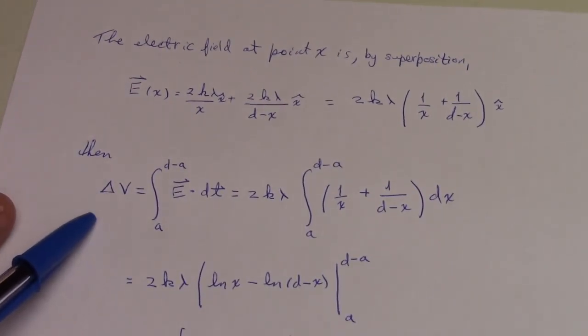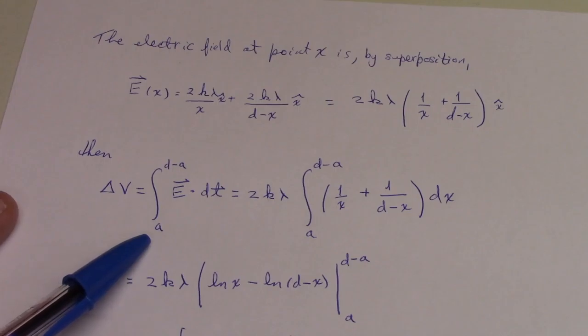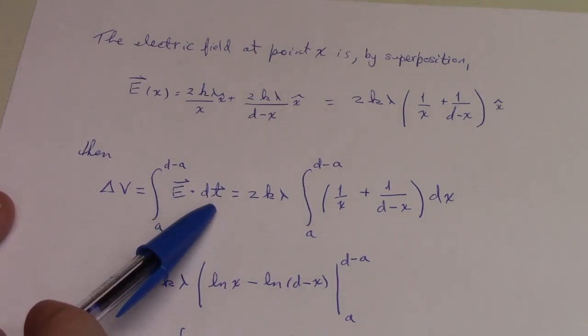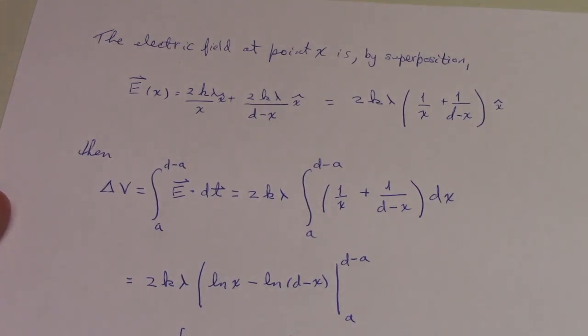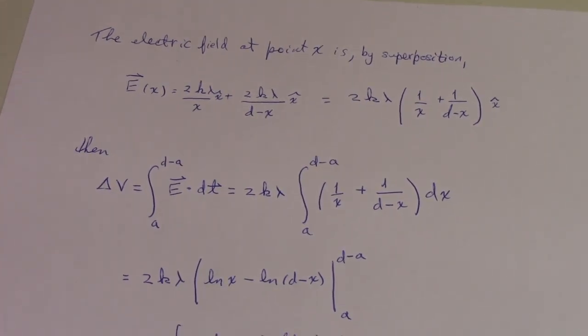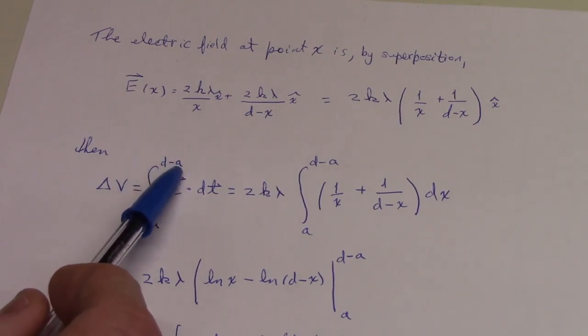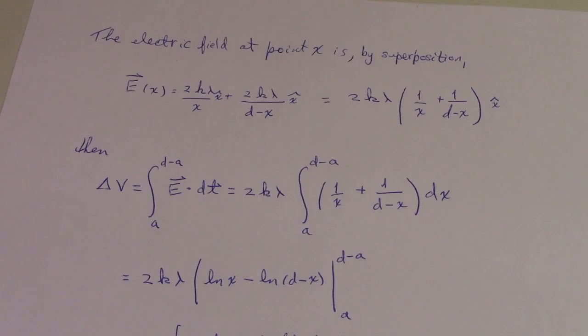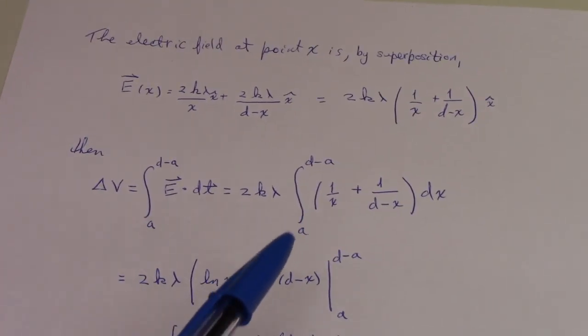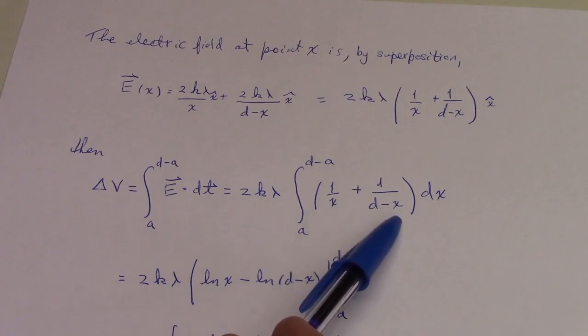Given the field, we can now compute the potential. The potential is just a line integral of E dot dl, where dl is an infinitesimal distance in space. In this case, we're going to take it to be simply dx. We have the integral from a, the outward radius of the wire on the left, to d minus a, the outward piece of the wire on the right, of E dot dl. That's 2k lambda integral from a to d minus a of the quantity 1 over x plus 1 over d minus x dx.